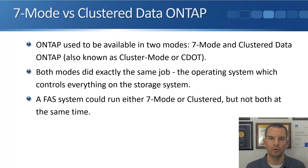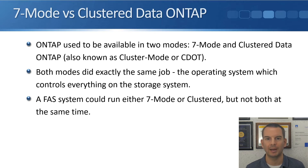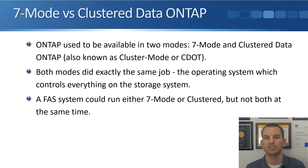ONTAP used to be available in two different modes at the same time: 7-MODE and Clustered Data ONTAP, also known as Cluster Mode or CDOT. The current implementation of ONTAP is the clustered version. Both modes did exactly the same job — acting as the operating system and controlling everything on the storage system. When you bought a FAS hardware platform, you had the choice of running 7-MODE or Clustered, but not both at the same time.